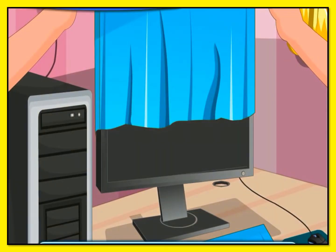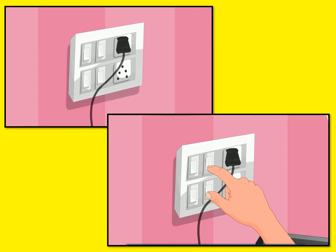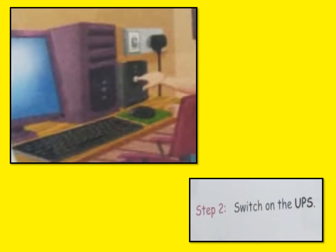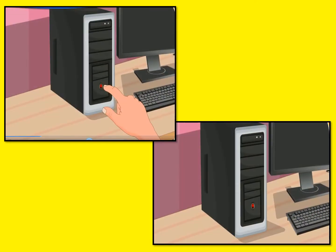Steps to switch on a computer are as follows. First, remove all the covers from the computer and its devices. Now switch on the main switch of the switchboard. Students, if a UPS is attached to your computer, then after switching on the main switch you can switch on the UPS.